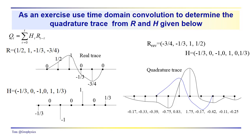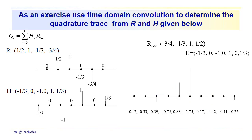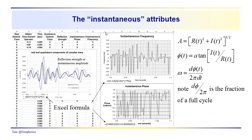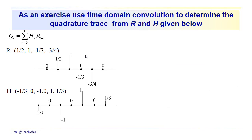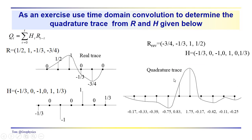For longer operators, we can use the convolution theorem instead of this laborious process in Excel: simply take the Fourier transforms of both the real trace and the time domain operator, multiply them in the frequency domain, and then take the inverse Fourier transform to get the quadrature trace. I hope this helps explain the time domain process used to calculate the quadrature or imaginary trace. Thanks for joining us.